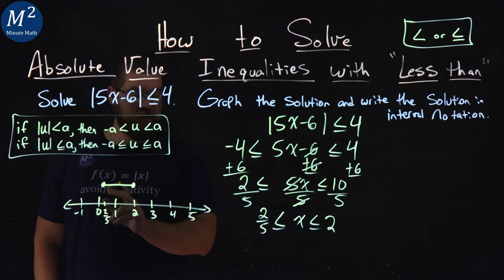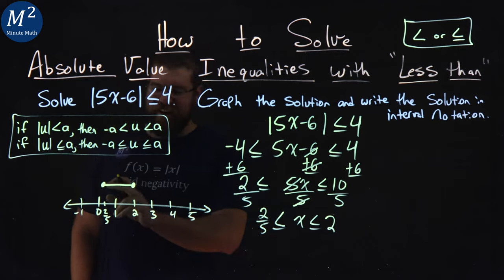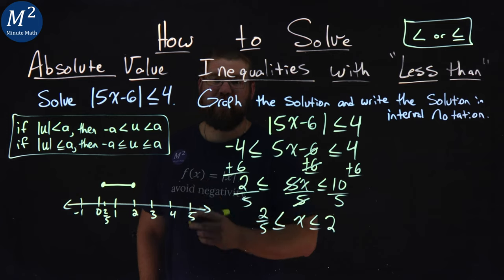So now we have 2 fifths is less than or equal to x, which is less than or equal to 2. And we've graphed that here.